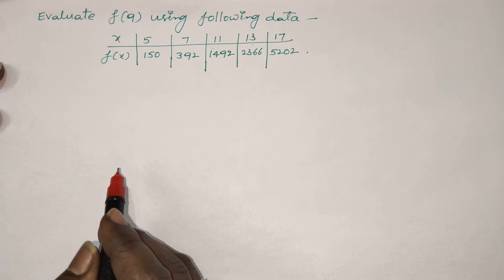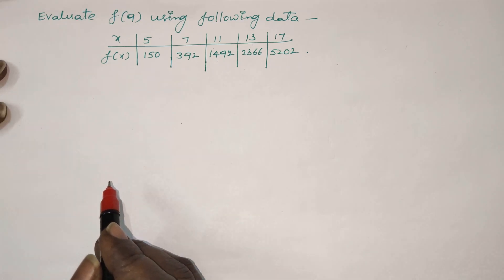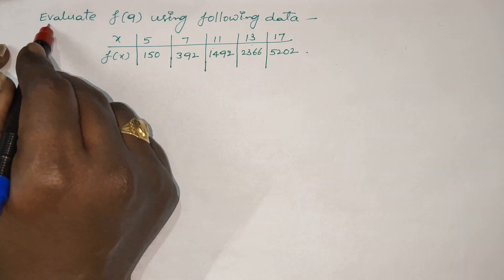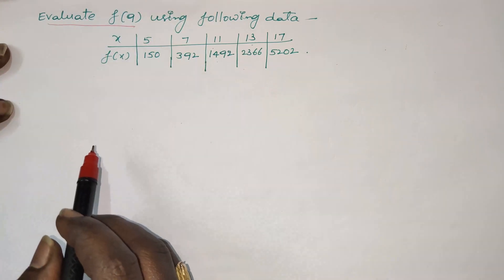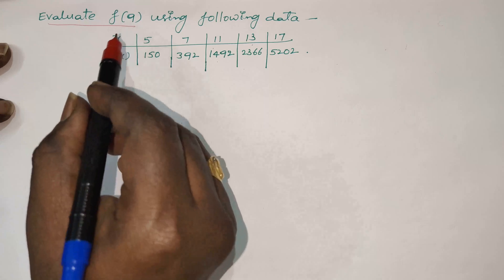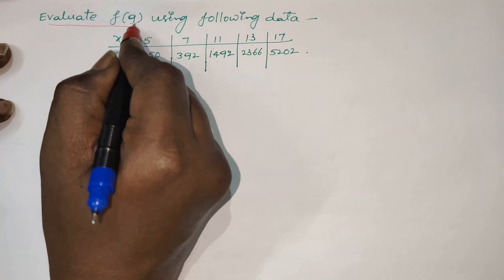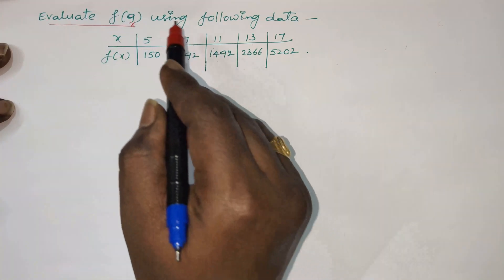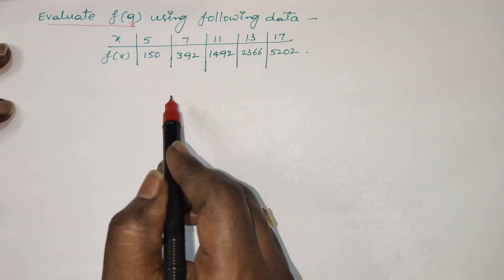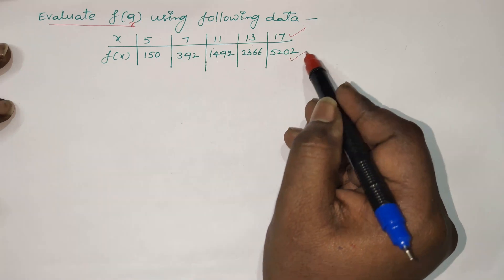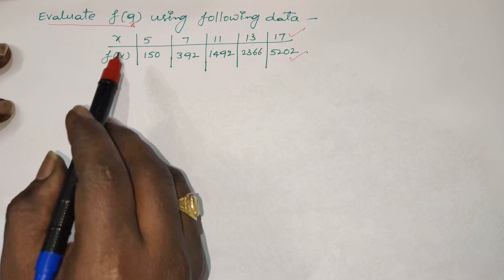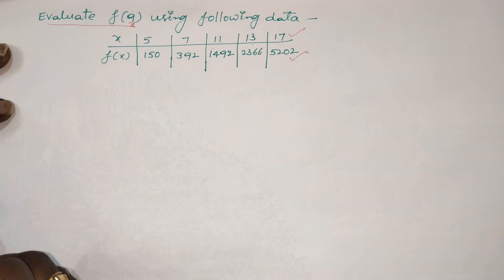Hi everyone, welcome back to our channel. In this video I would like to explain another example on interpolation. We have to evaluate f of 9 — find the function value at the point x equals 9 — using the following data. The first row represents the x values and the second row represents the respective function values at x.